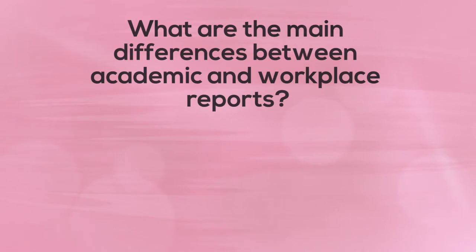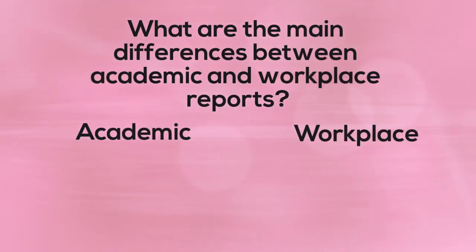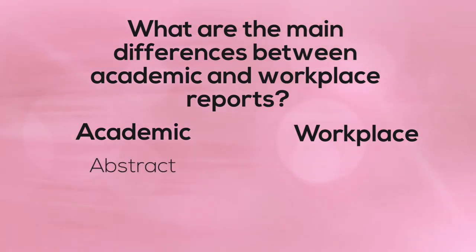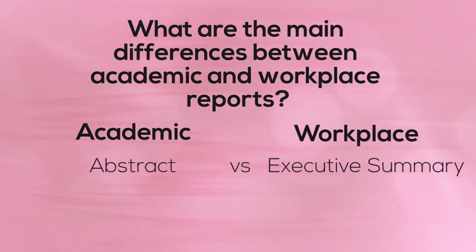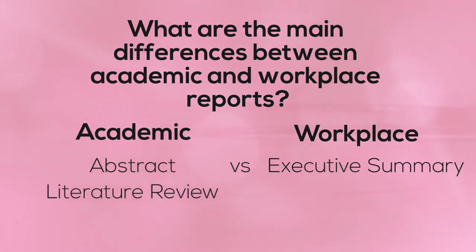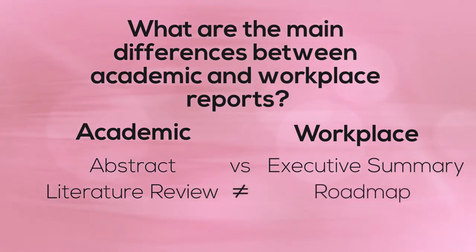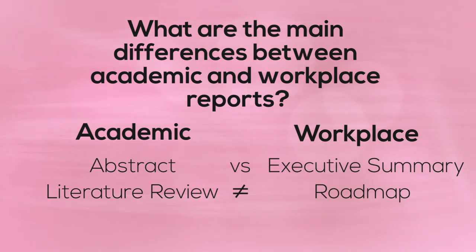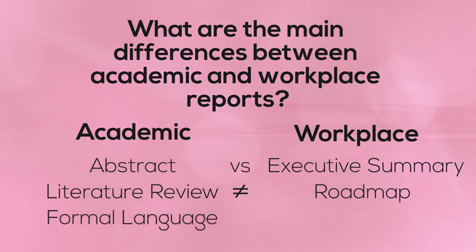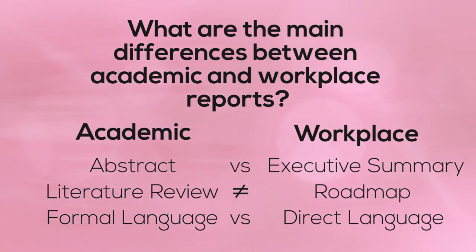So have you thought about that question? Some of the main differences are listed on the screen now. It could be section names — abstract or executive summary. It could be totally different sections; for example, literature review in an academic report, and roadmap in a workplace report. And it could be language use: more formal academic English in an academic report, and more direct plain English in a workplace report.